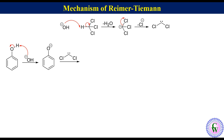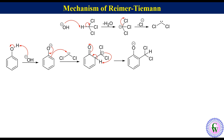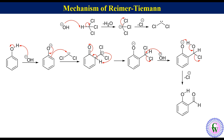Electrophilic dichlorocarbene adds to the ortho position to produce a non-aromatic carbanion, which undergoes aromatization to produce 2-dichloromethyl phenolate. Hydroxide ion also acts as a good nucleophile and displaces one of the two chlorides to produce 2-chloro-hydroxymethyl phenolate, which eliminates chloride ion to produce salicylaldehyde.